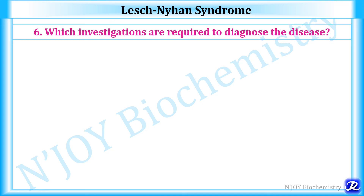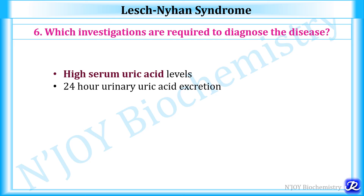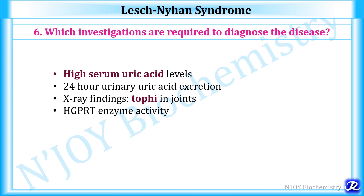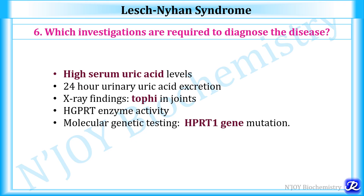Investigations required to diagnose Lesch-Nyhan syndrome include: serum uric acid level estimation (hyperuricemia will be present), 24-hour urinary uric acid excretion, X-ray to detect tophi in joints, HGPRT enzyme activity assay (which will be diminished), and molecular genetic testing to detect HGPRT gene mutation. Thorough clinical evaluation and detailed patient history are also required.